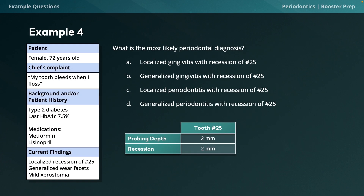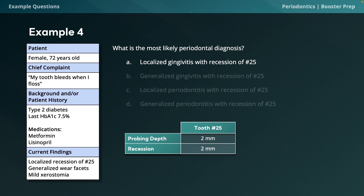Example question 4: A 72-year-old female with bleeding on flossing, diabetic with HbA1c of 7.5%, taking metformin and lisinopril. Findings: localized recession on tooth number 25, generalized wear facets, mild xerostomia. Tooth number 25 has a probing depth of 2 mm and 2 mm of recession. What is the most likely periodontal diagnosis? The answer is localized gingivitis with recession of number 25 — the disease is localized to that tooth, and because the probing depth is less than 4 mm, gingivitis is the most appropriate diagnosis.